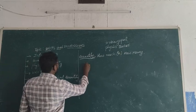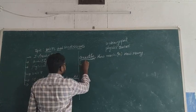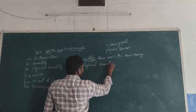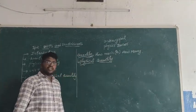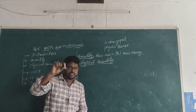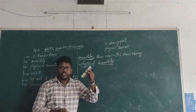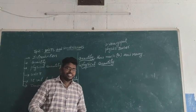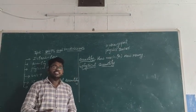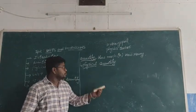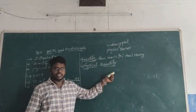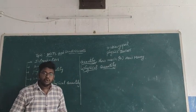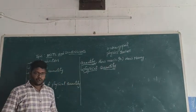Next, let me go to physical quantity. What is physical quantity? For example, if we take a chalk, a duster, or a broom — can we measure them or not? Which can be able to be measured, we call that a physical quantity. Physical quantity is nothing but measurable quantities.